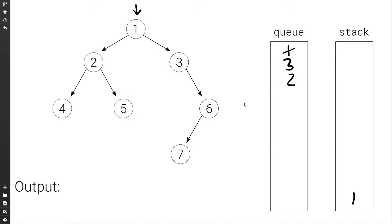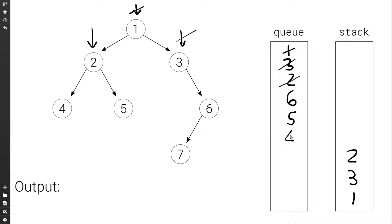We go back to the queue, set the current node to the front — 3. We pop the front of the queue, push the current node to the stack, then add the right child (6) to the queue; 3 doesn't have a left child. We go back to the queue, set current to the front — 2. We pop it, push it to the stack, then add the right child (5) to the queue followed by the left child (4). We go back to the queue, set current to front — 6. We pop it, push it to the stack, then add the left child (7) since 6 has no right child.